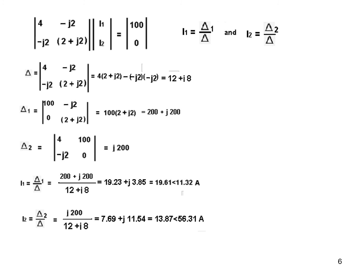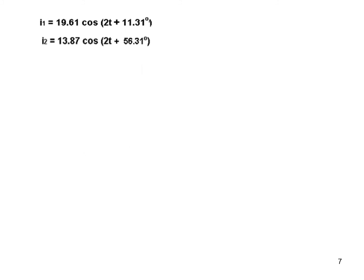Now we are ready to go into the time domain. So for time domain, the magnitude cos omega t plus this angle. And similarly for I2, the magnitude cos omega t plus this angle. So we have got these two currents in the time domain.